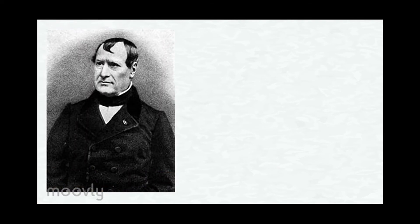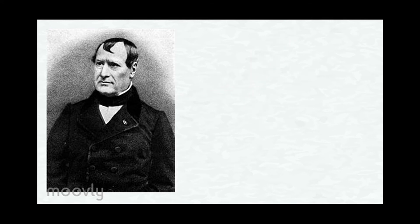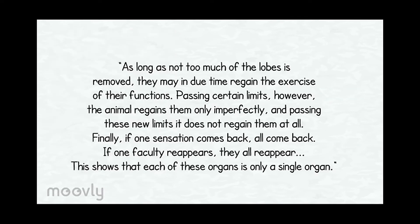Alternatively, in the early 1800s, Jean Pierre Flourens, a physiologist, after performing ablation experiments on birds and finding that they could still fly, peck, and perform a range of regular behaviors, promoted the idea that one could remove a rather large part of an animal's brain without the animal losing any of its faculties. Flourens argued that the loss of function was a result of the amount of damage rather than the location of the damage, propagating the principles of equivalence of structure and mass action. He wrote: 'As long as not too much of the lobes is removed, they may in due time regain the exercise of their functions.'